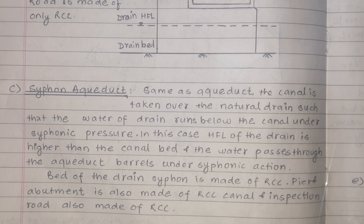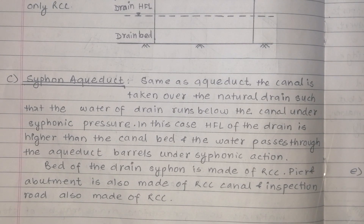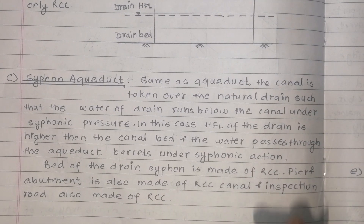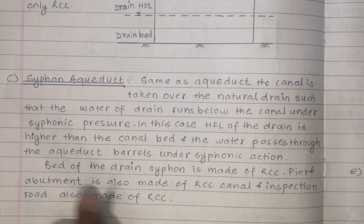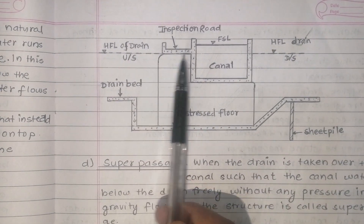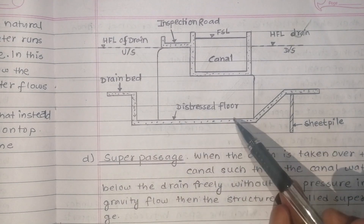In a drain siphon, the canal is taken over the natural drain such that the water of the drain runs below the canal under siphoning pressure. In this case, the HFL of the drain is higher than the canal bed. The drain siphon is made of RCC, and the piers and abutments are also made of RCC. The canal inspection road is also made of RCC.